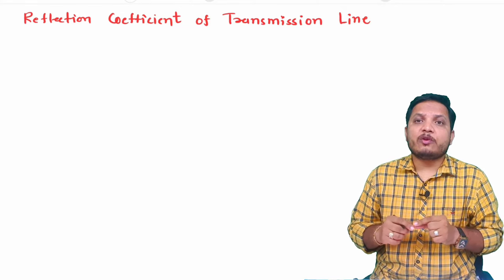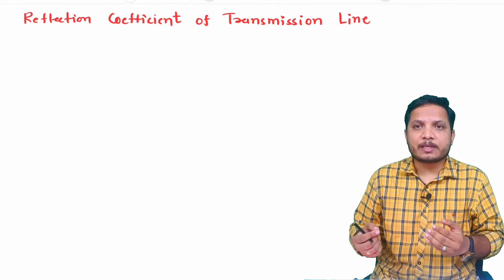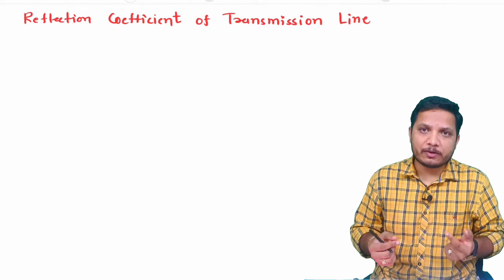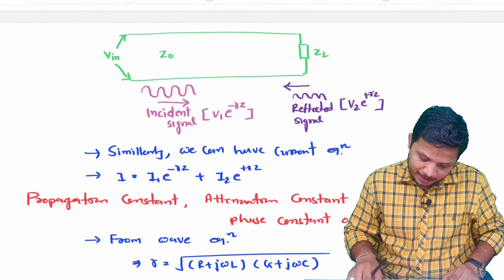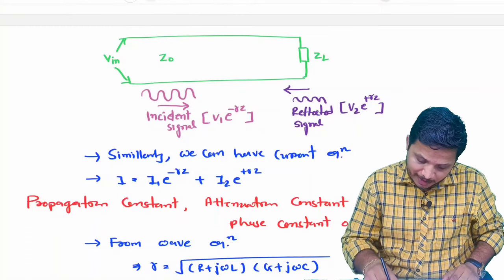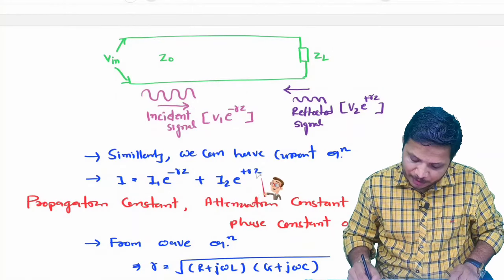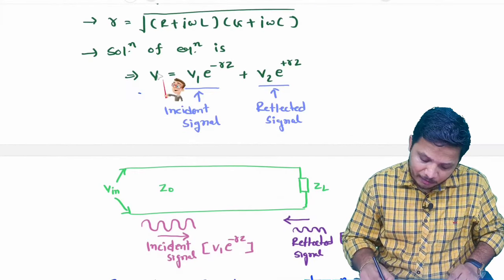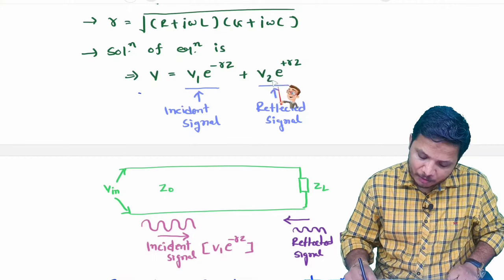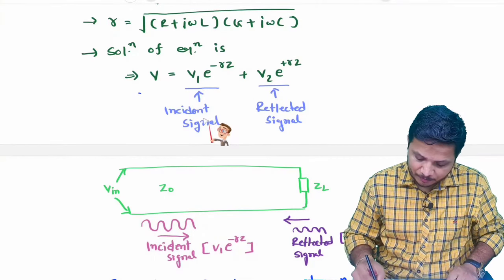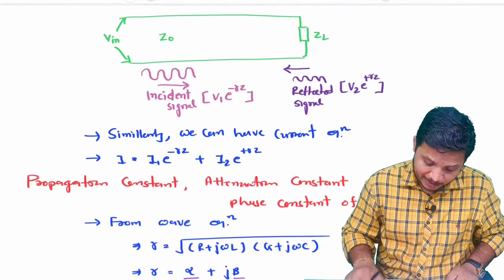To understand the reflection coefficient of a transmission line, we first need to see the voltage and current equations of the transmission line, which we have already derived in previous videos. The current equation is I = I1·e^(−γz) + I2·e^(+γz) and the voltage equation is V = V1·e^(−γz) + V2·e^(+γz). These two equations will be used to derive the reflection coefficient.